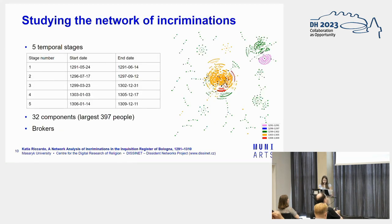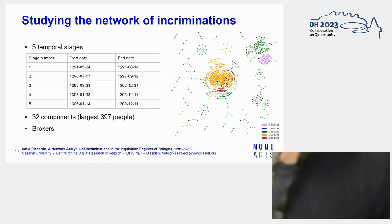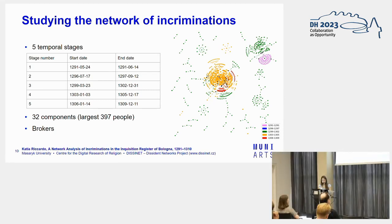Here I have a graphic representation of the full network of incriminations. We reconstructed five different stages, which you see in different colors — one is missing because we had a stage that did not generate any accusation, which is quite a rare case. We have in total 32 components. Many are very small and involve just two to three people. We have the largest one with 397 people, which connects also three different stages.